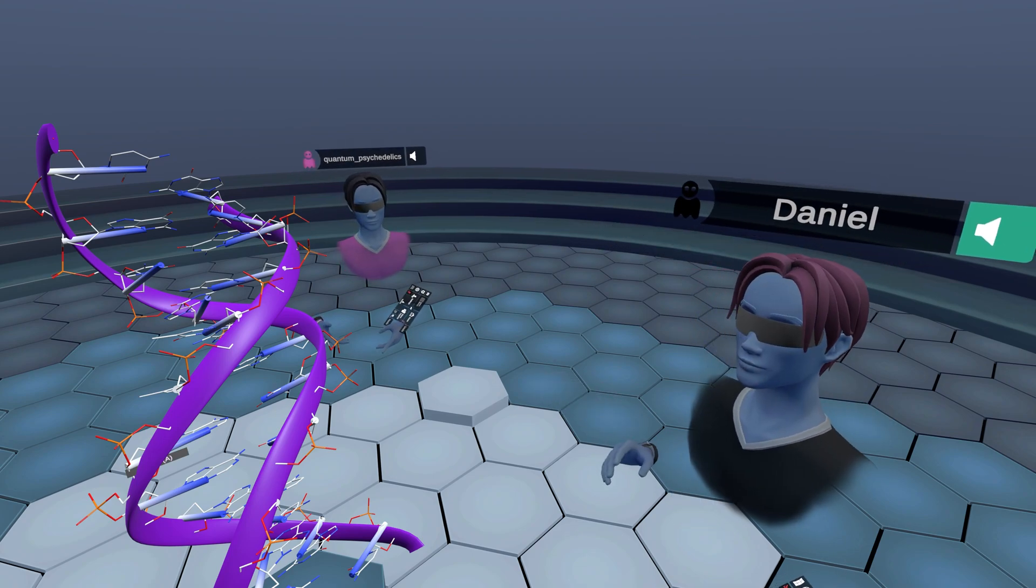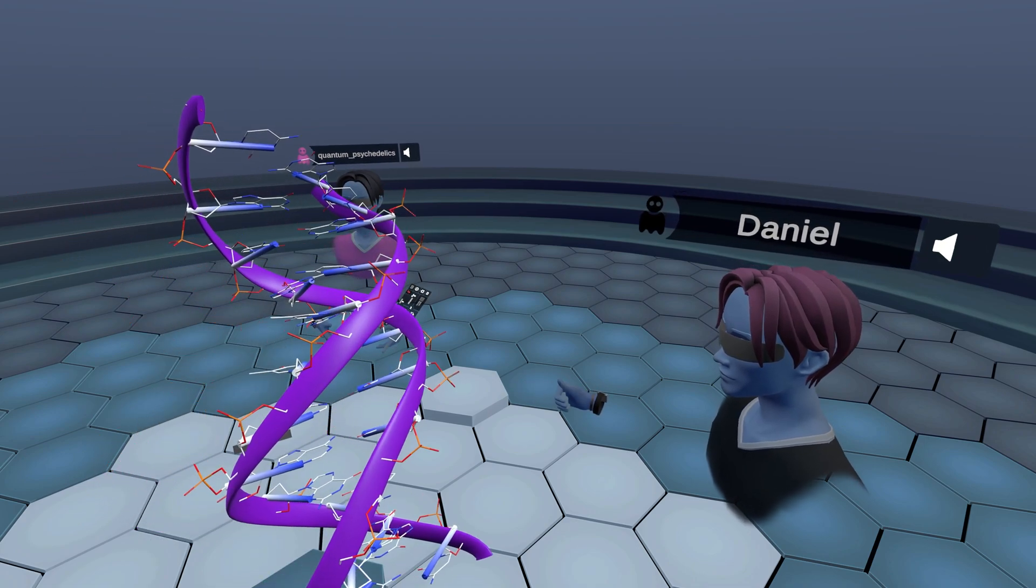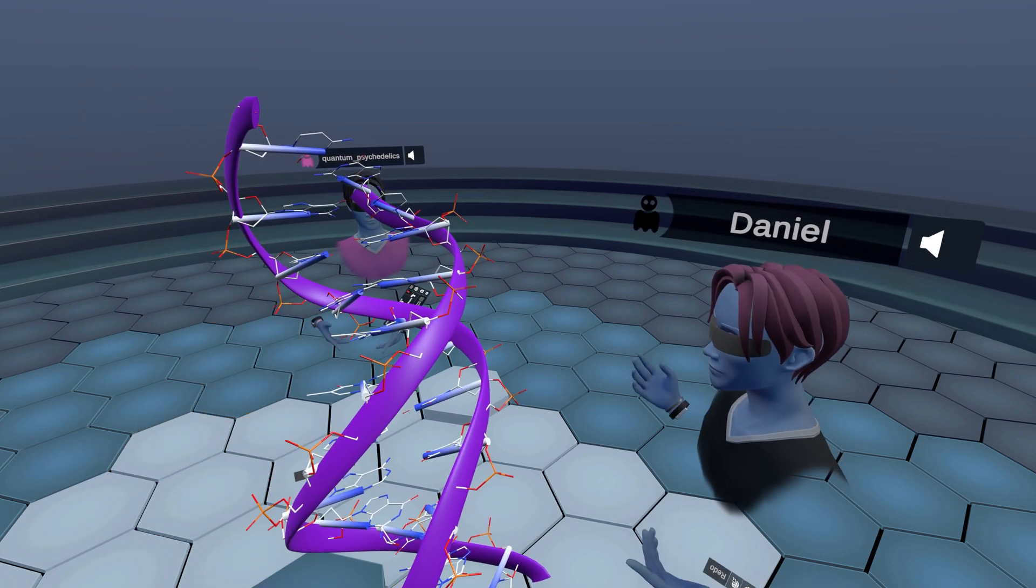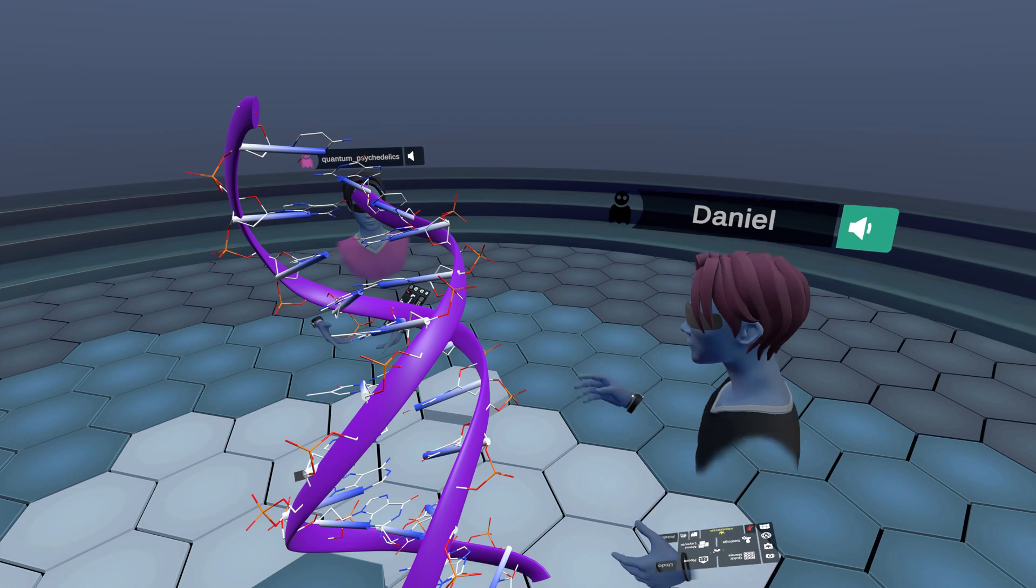SNPs, or single nucleotide polymorphisms, basically, they are the most common type of genetic variation among people.